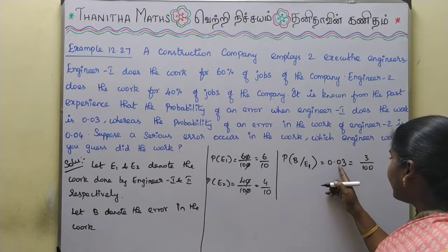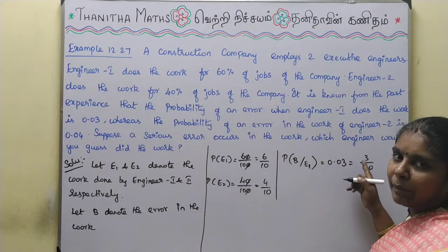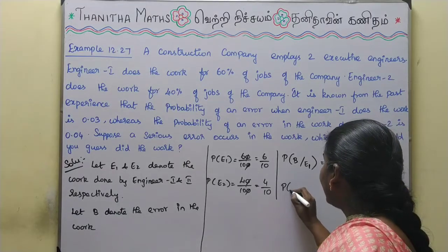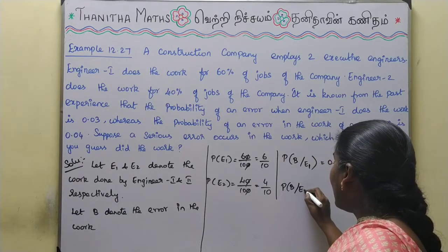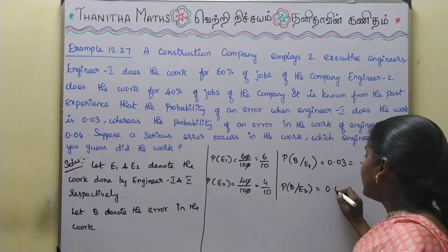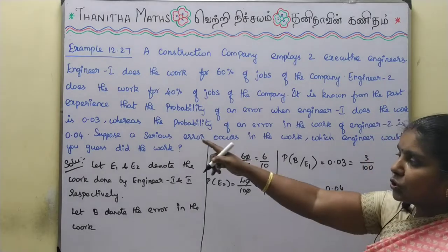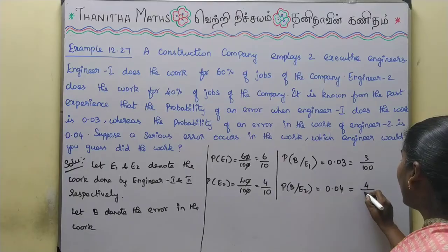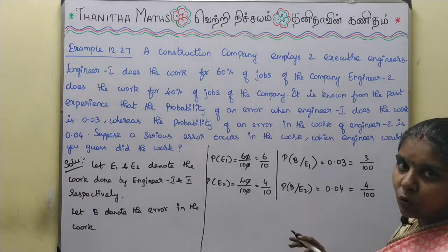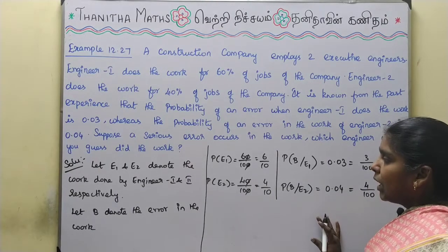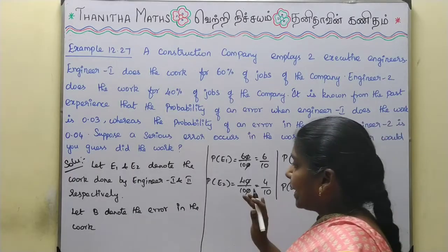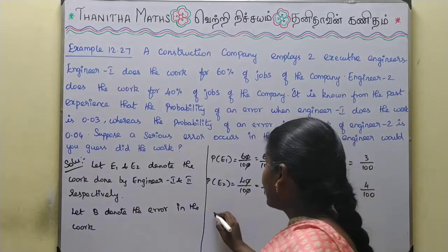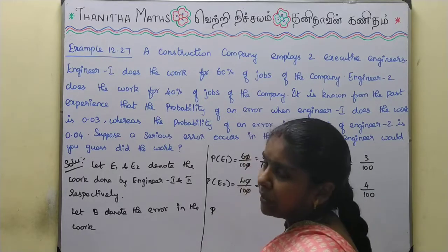Since 0.03 has two decimal digits, we multiply and divide by 100, giving us 3 by 100. For Engineer 2, the probability of an error is 0.04, which as a fraction is 4 by 100. Now, P of E1 is 60% which is 6 by 10, and we will apply these values.